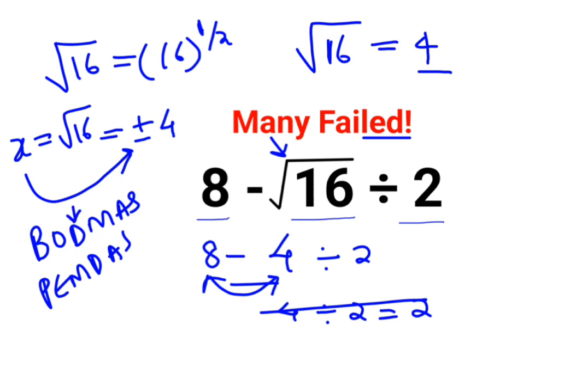So first what you need to do is that instead of doing this, you need to first do the division. So minus 4 divided by 2 is minus 2. So answer for this question is 6.